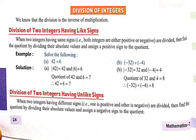Now second, division of two integers having unlike sign. When two integers have different signs — यदि हमारे integers के अलग-अलग sign होंगे, one is positive and other is negative — then find the quotient by dividing their absolute values and assign a negative sign to the quotient. इस situation में अगर हमारा एक integer positive में है और एक integer negative में है तो हमारा जो quotient आएगा वो negative में ही आएगा।